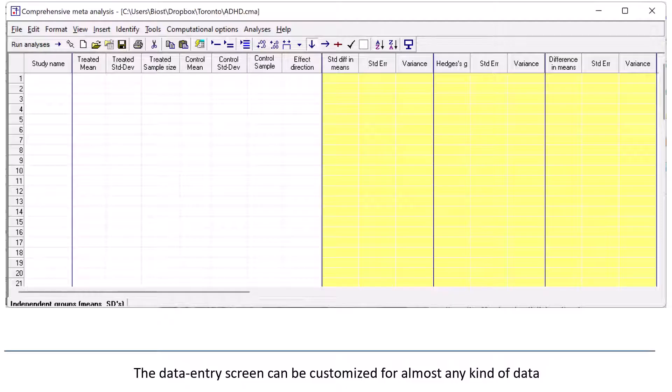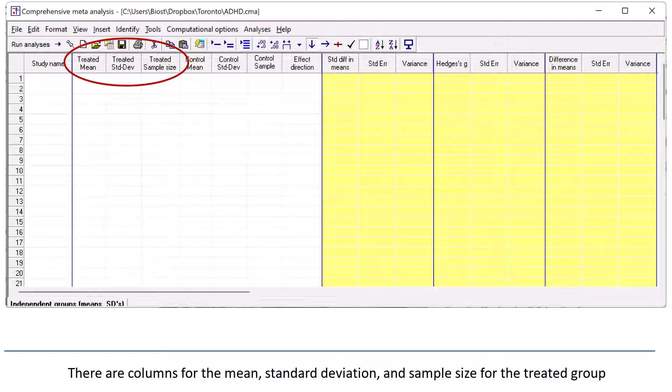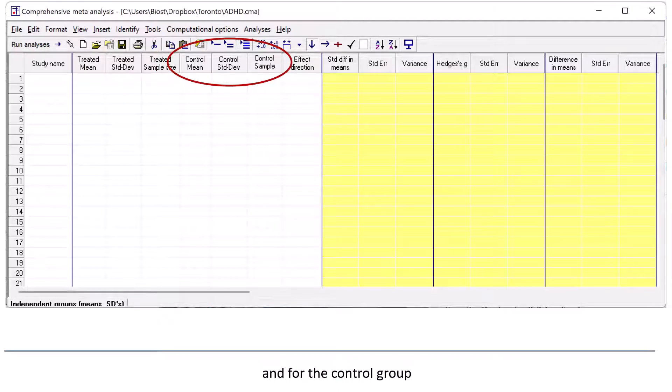The Data Entry screen can be customized for almost any kind of data. Suppose I was working with studies that compared the means in two groups. The screen in CMA might look like this. There are columns for the mean, standard deviation, and sample size for the treated group and for the control group.